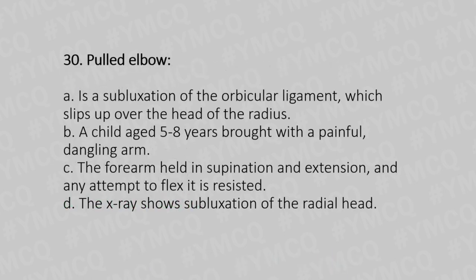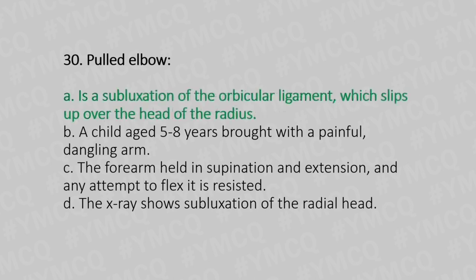Now let's move to question number 30. Pulled elbow. Option A: is a subluxation of the annular ligament which slips up over the head of the radius. Option B: a child is 5 to 8 years old with a painful arm and dragging. Option C: the forearm is held in supination and extension and any attempt to flex is restricted. Option D: the X-ray shows subluxation of the radial head. And the answer is Option A, subluxation of the annular ligament which slips up over the head of the radius.